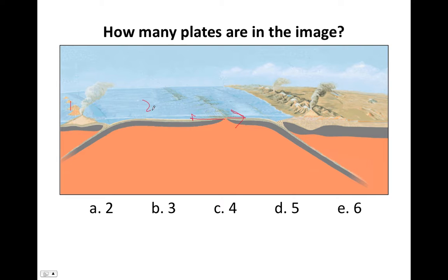Moving in, here we have our next plate boundary. I'll draw the arrow for the direction this plate is going. Here's our next plate boundary — this is also a convergent plate boundary and a subduction zone. There's the trench, here's the coastal mountain range, because it's oceanic-continental convergence subduction, like the Andes of South America. And here's the arc volcanism, the continental volcanic arc. So that makes this a third plate. And this plate here is moving toward it. This is our last plate — there are no more plate boundaries — so that's plate number four. We have plate one, boundary, plate two, boundary, plate three, boundary, and then plate four.